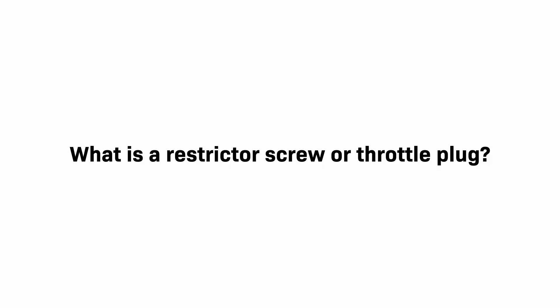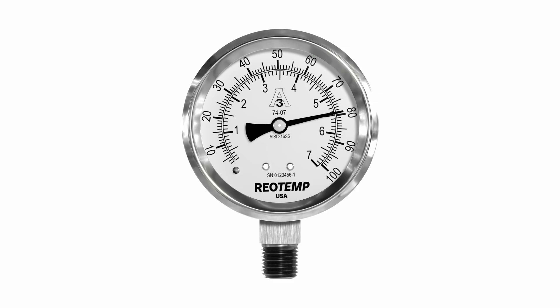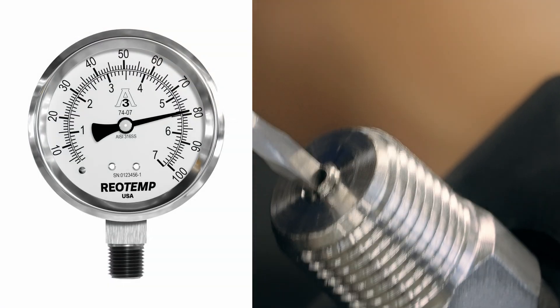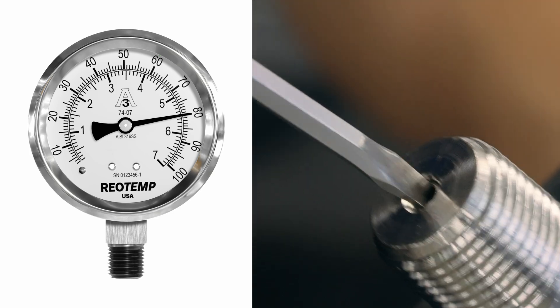What is a restrictor screw or throttle plug? A restrictor screw or throttle plug serves to control pressure fluctuations within the gauge. By installing the screw or plug, users can regulate the flow of fluid into the gauge, stabilizing readings and mitigating the effects of rapid pressure changes.